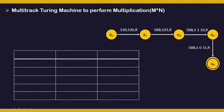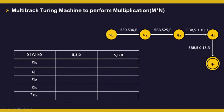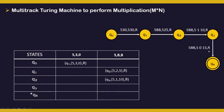Let us now draw the transition table for the above diagram. We have states q0, q1, q2, q3, and q4, where q4 is our final state. The input symbols include 5, 3, 0 and 5, b, b. From q0 we take 5, 3, 0 as input, output 5, 3, 0 unchanged and move rightward to go to q1. From q1 we take 5, b, b as input, change it to 5, 2, 5 and move rightward to go to q2. From q2 we take 5, b, b as input, change it to 5, 1, 10 and move rightward to go to q3. From q3 we take 5, b, b as input, change it to 5, 0, 15 and move rightward to go to final state q4. This is the transition table for the above diagram.